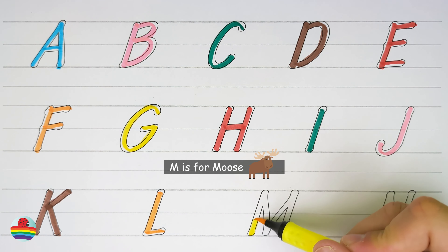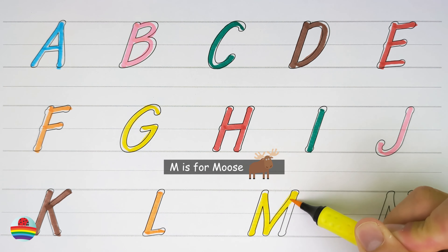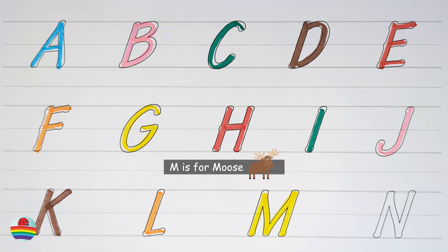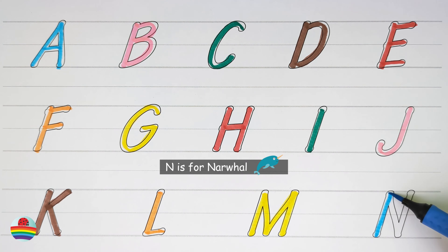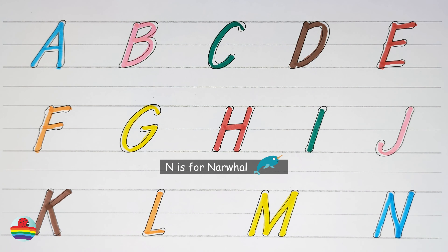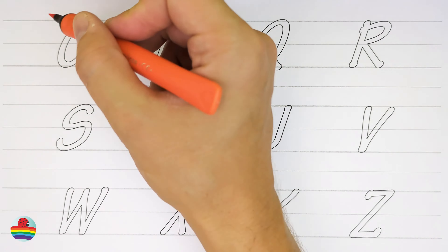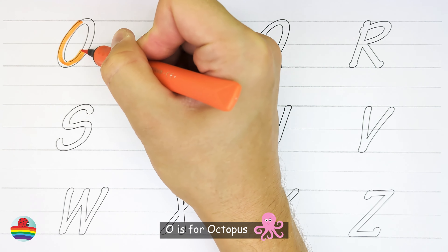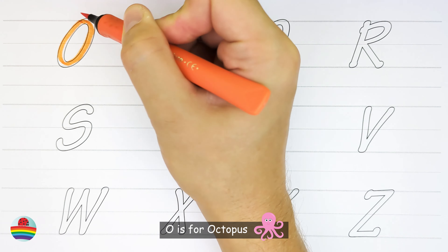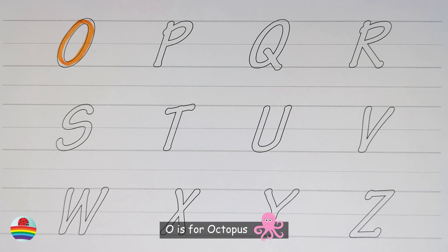M. M is for Moose. M. N. N is for Narwhal. N. O. O is for Octopus. O.